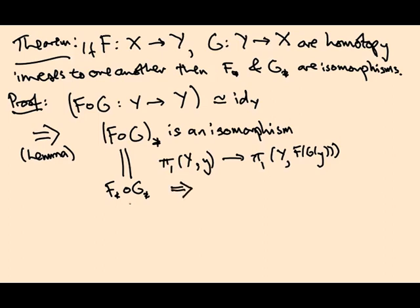In particular this tells us g_star has to be injective, because if g_star failed to be injective it would have a kernel and then this composition would have a kernel, but it's supposed to be an isomorphism. So this implies g_star is injective. Similarly, f_star has to be surjective because if f_star missed something then the composition would miss that thing.